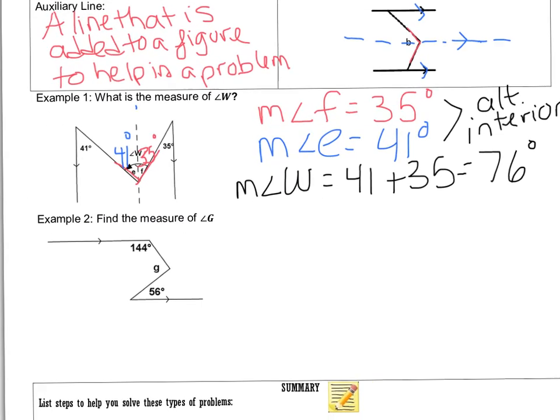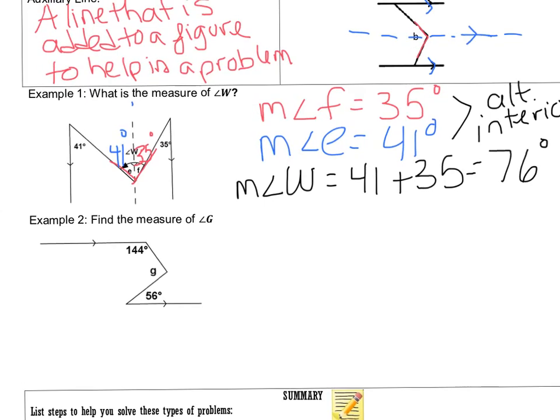Okay, let's look at one more example with auxiliary lines. We want to find out what this entire angle at G is. We know that we already have two parallel lines here. So, I know that I'm going to draw in my auxiliary line that's going to be parallel to those two sides, or those two lines, and it's going through angle G.